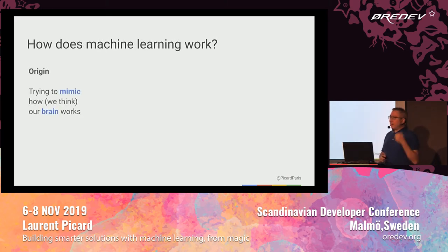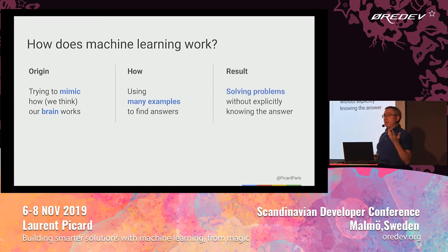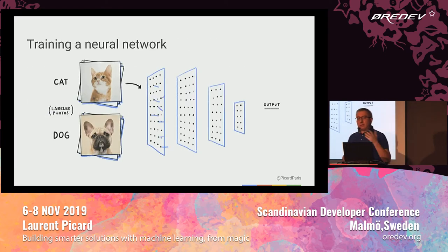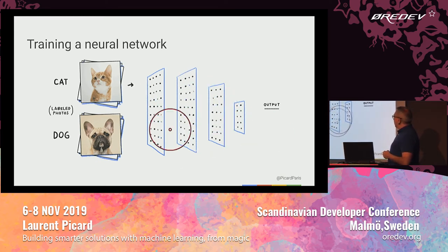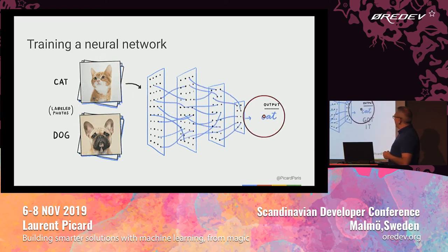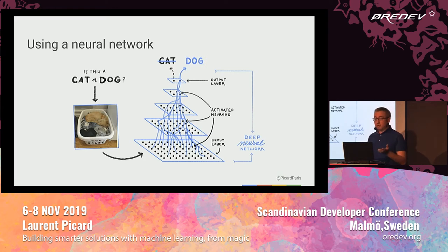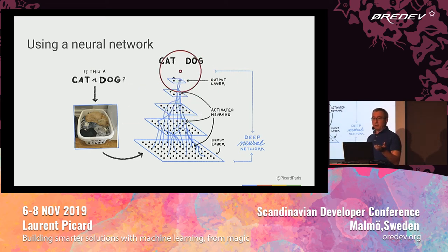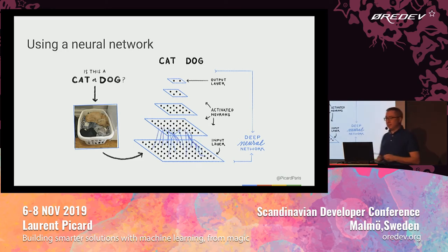How does it work? Experts have been trying to mimic the way our brain works with synapses and neurons. For that, we use a lot of examples, and the result is amazing — it's magic. We manage to solve problems. The typical example: if we want to distinguish cats from dogs in pictures, we train a neural network. Experts build the layers, provide inputs labeled 'this is a cat,' and that's the training phase. Once done, you can use the model with new pictures to get predictions — it will tell you 'most probably this is a dog.'